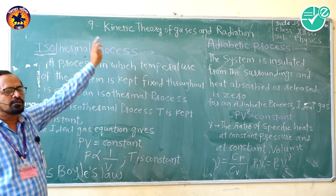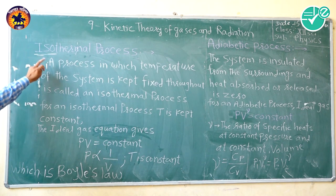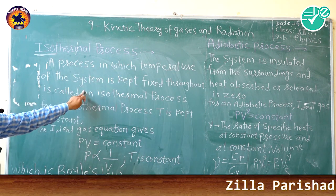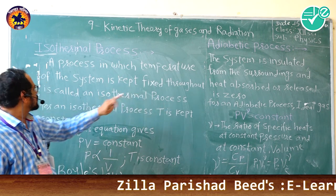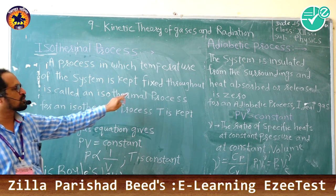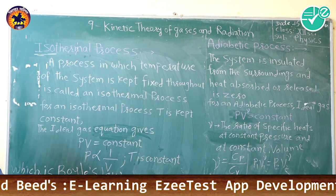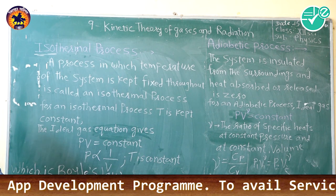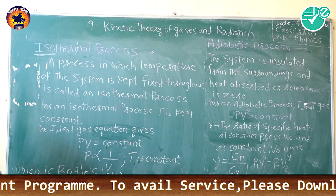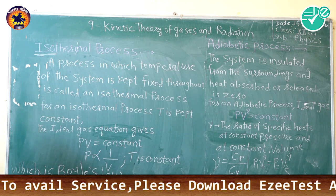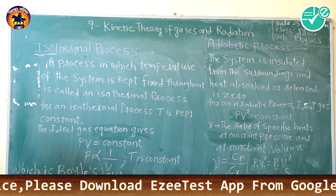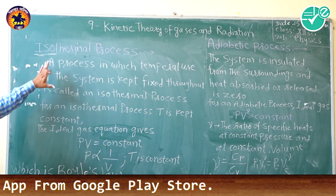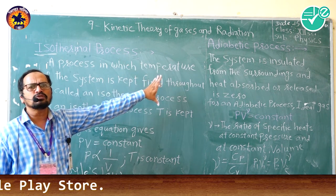In your board book, the definition is written as: a process in which the temperature of the system is kept fixed throughout is called an isothermal process. So when a process is going on, you can give energy of any type. Here we are using heat energy. The process is such that the temperature of the system remains constant throughout.